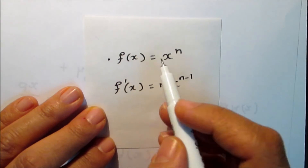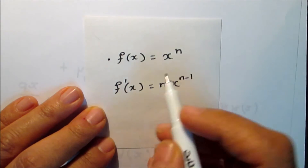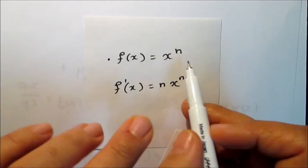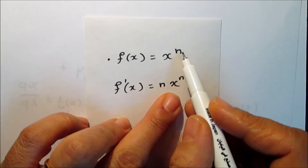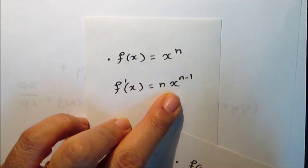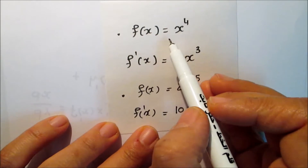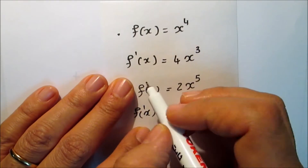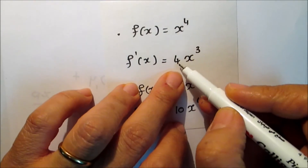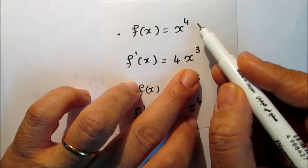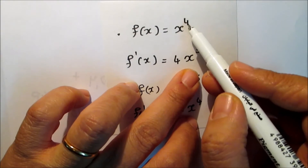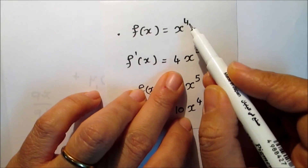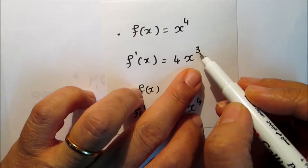Remember, if f(x) equals x to the power n, then f'(x), the first derivative, equals n times x to the power n minus 1. For example, if f(x) equals x to the power 4, then f' equals 4 times x to the power 3.